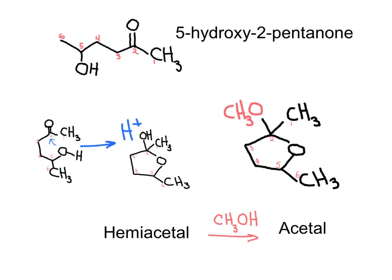As a summary, a hydroxyketone was transformed into a hemiacetal that continues reacting with an alcohol to produce an acetal. This is an acetal coming from a ketone because what is attached to two OR groups is also bonded to two carbons.